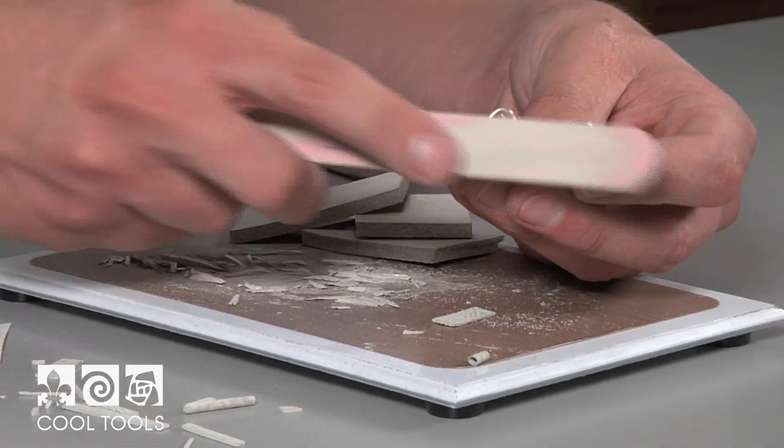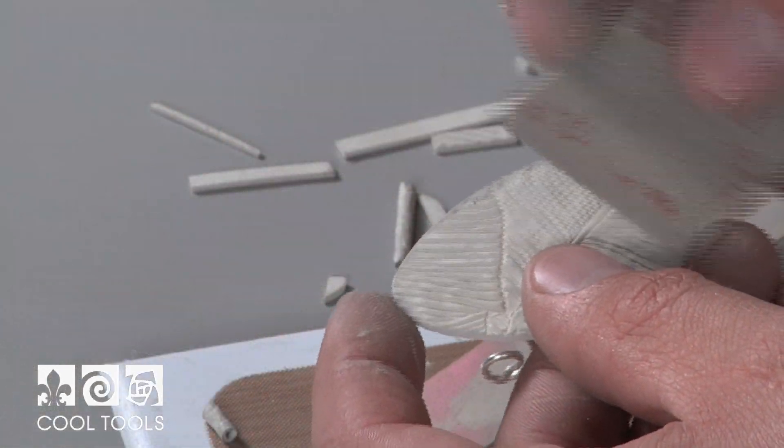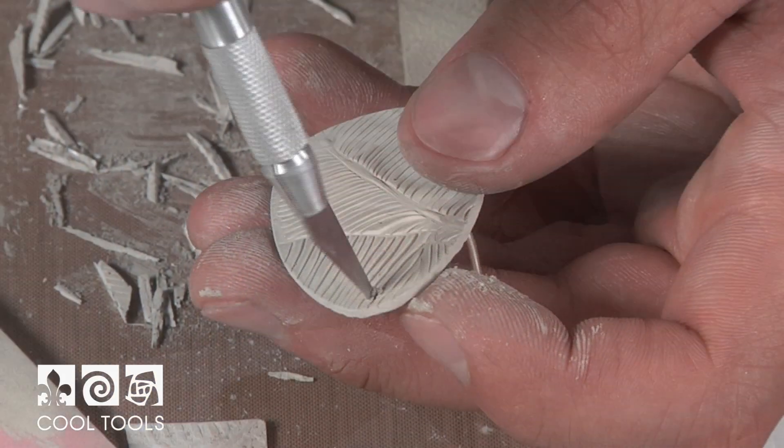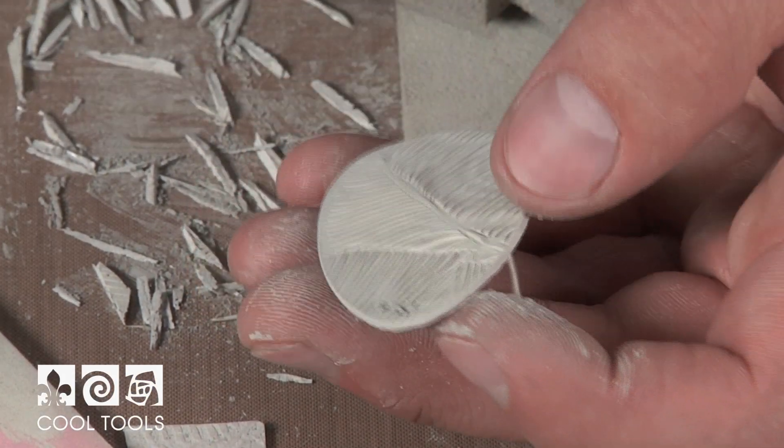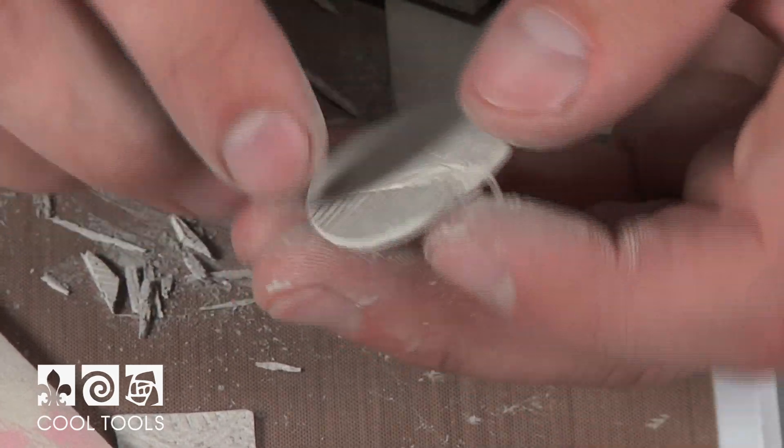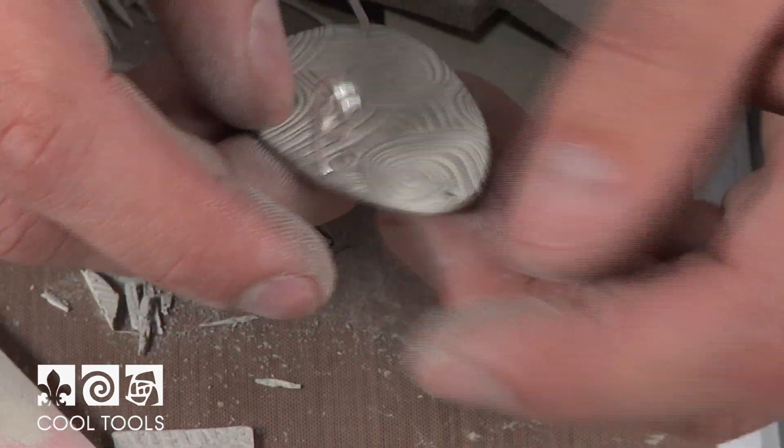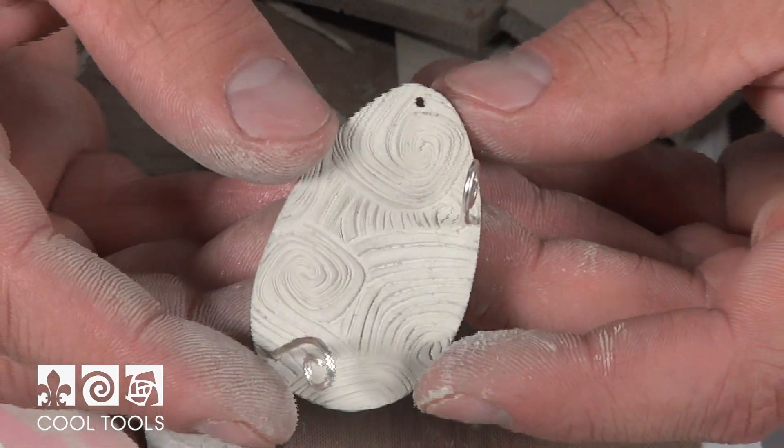While refining greenware in bone dry PMC 960, you will notice how easy it is to work with. The 960 is more flexible in the greenware stage than fine silver clay, which reduces your chances of breakage and makes it nice and simple to sand and file.